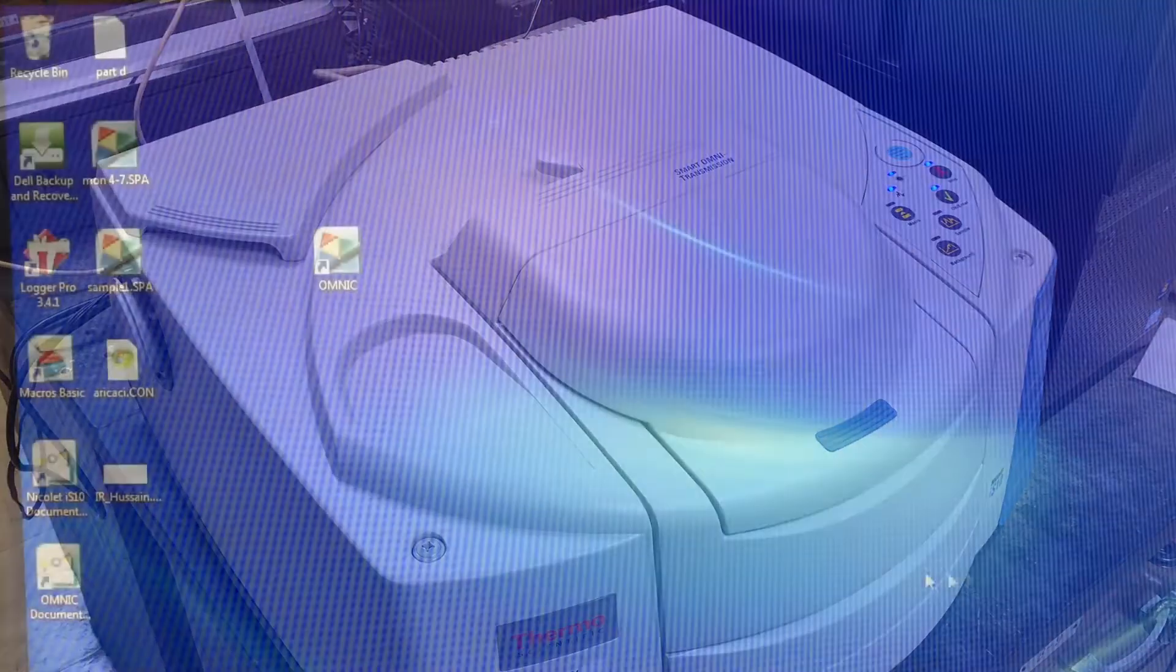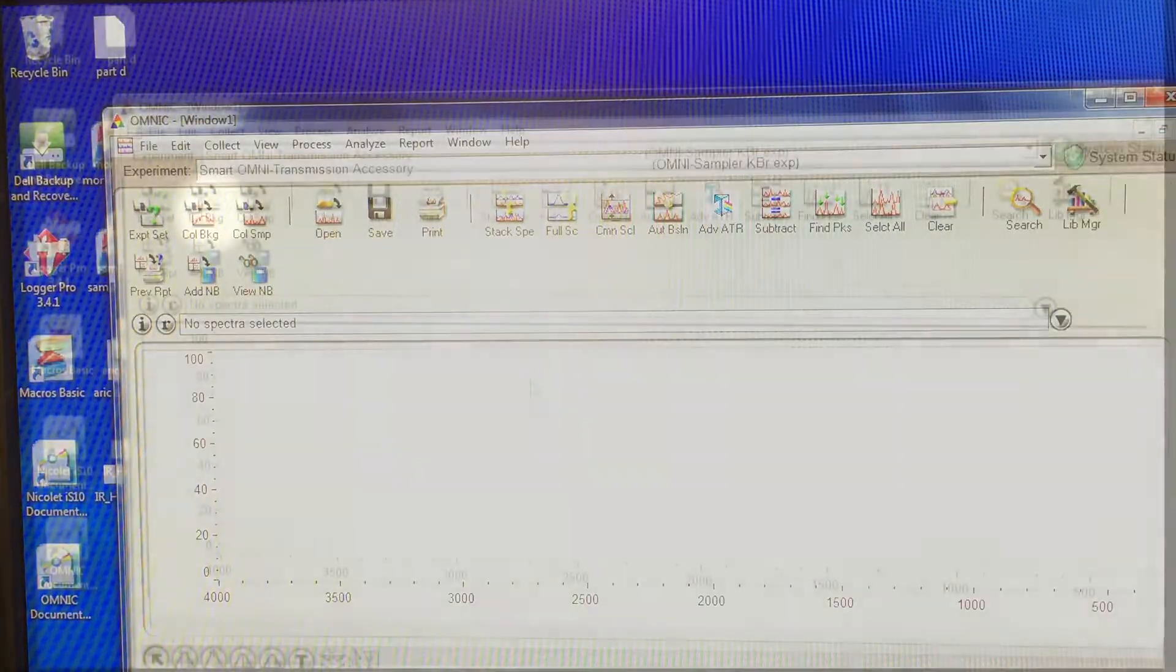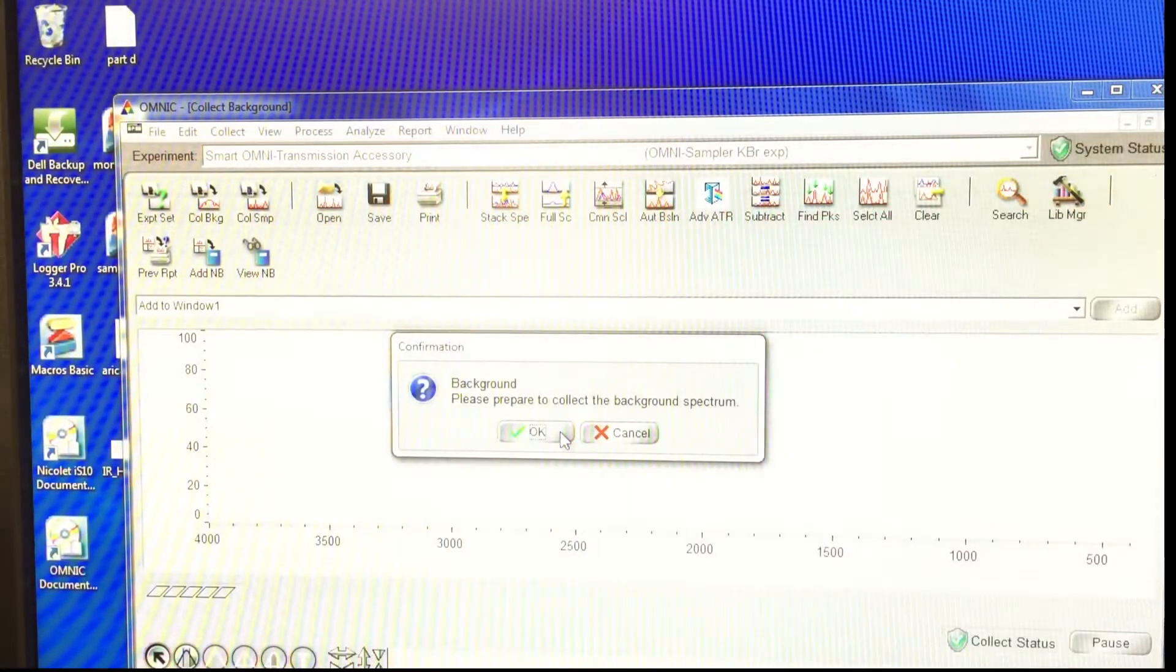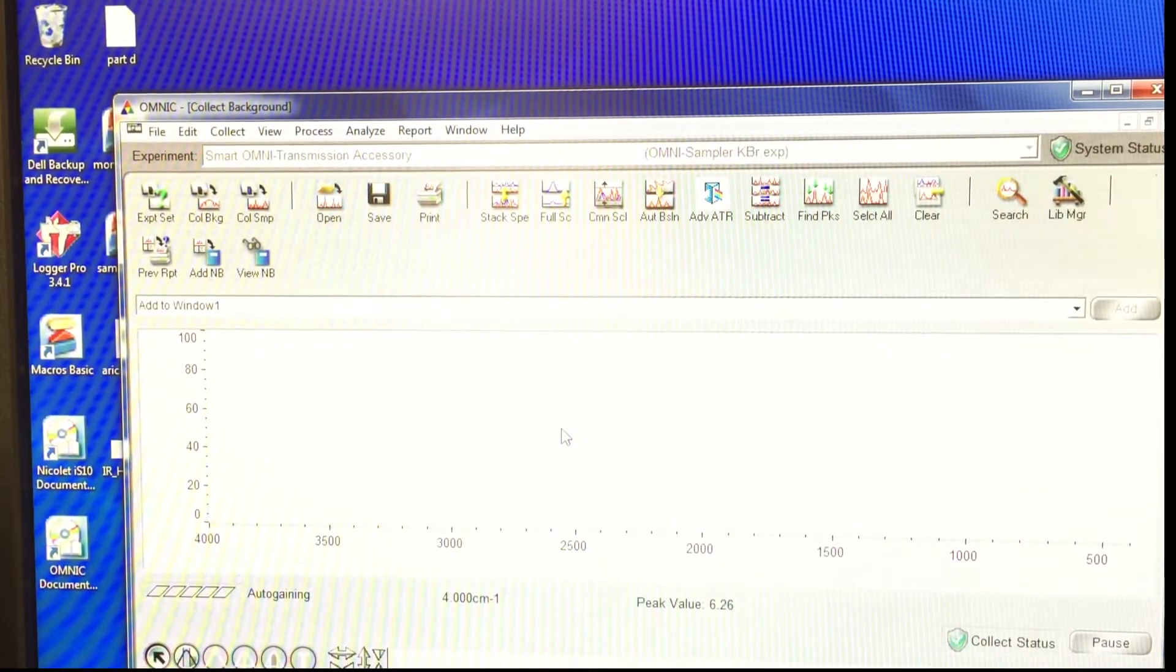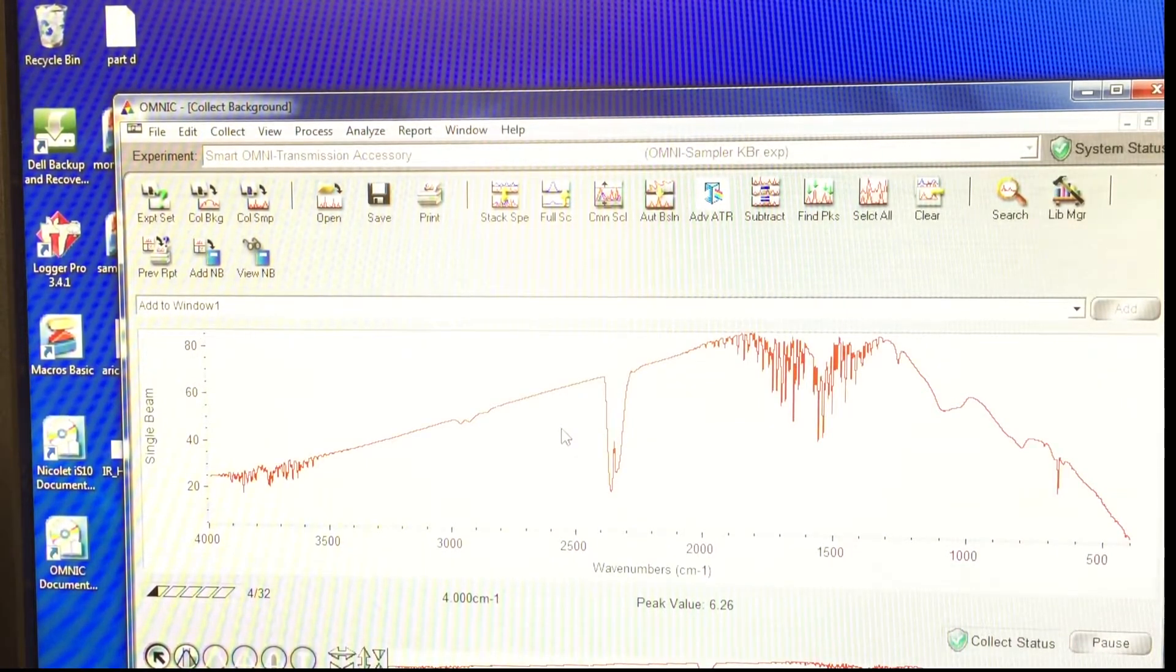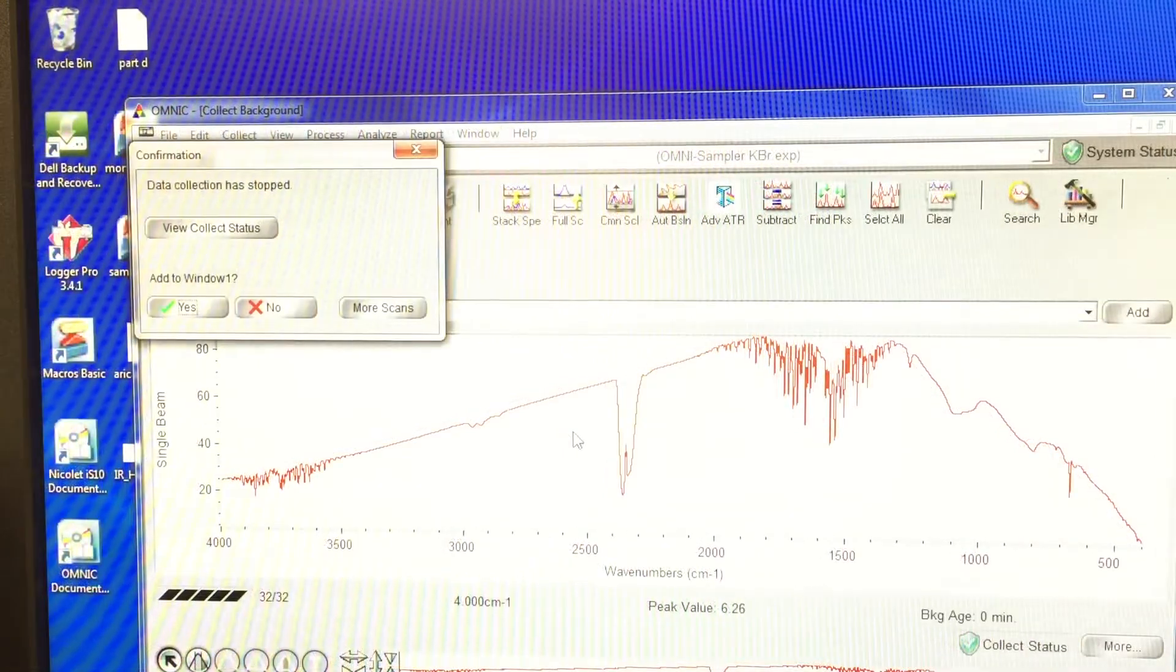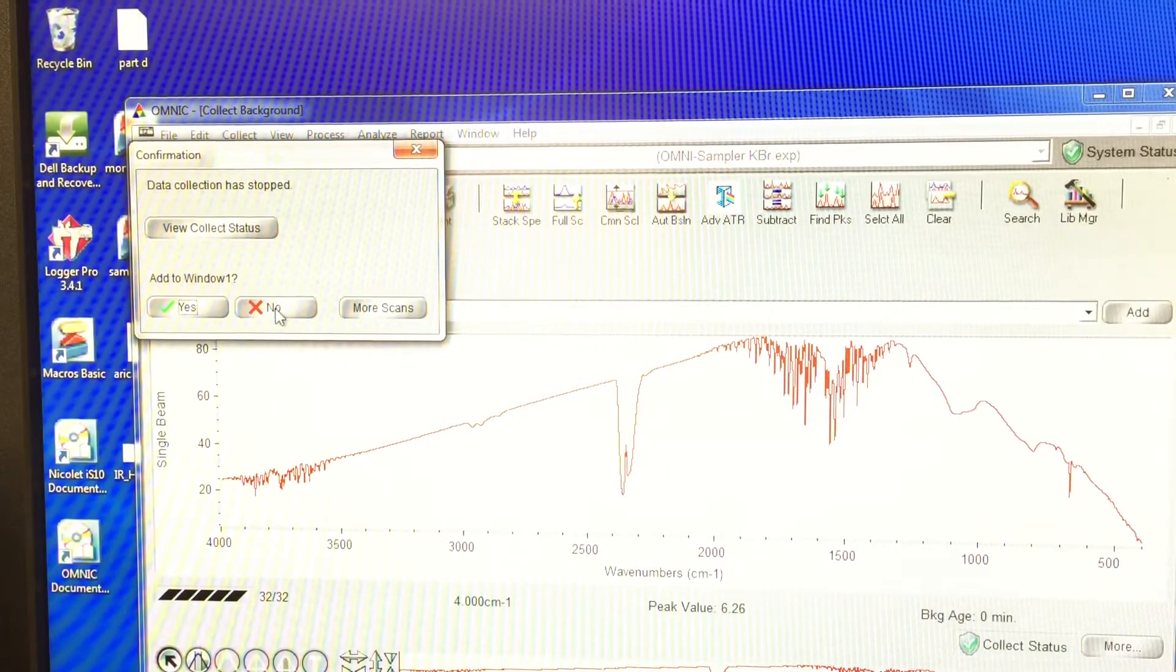Open the OMNIC application and click Collect Background. When the scan is complete, a dialog box will appear. This is just the background, so click No. Don't add it to the window.